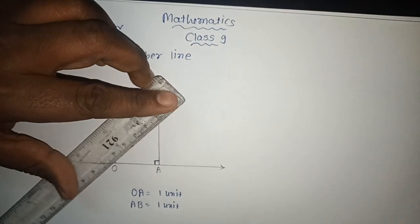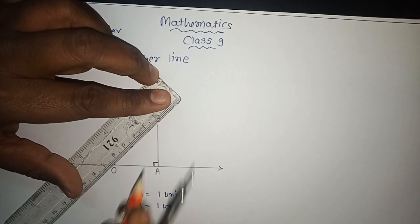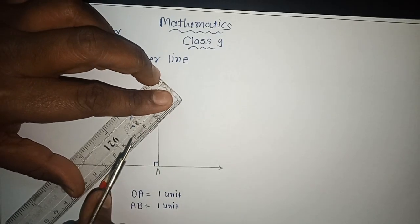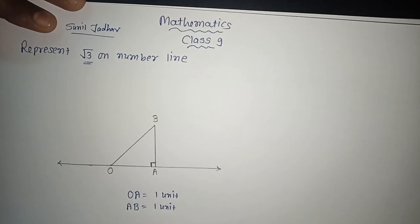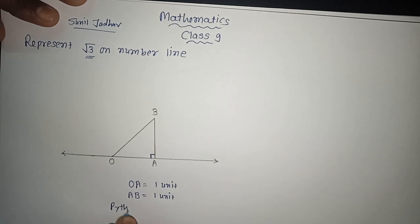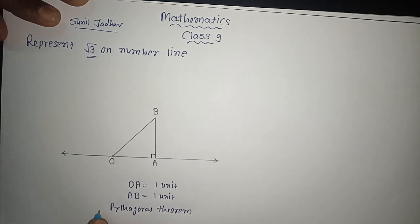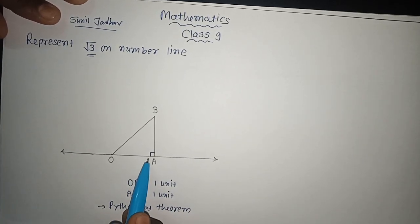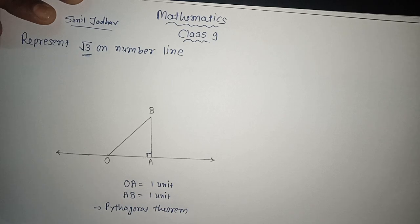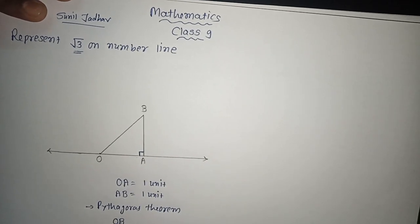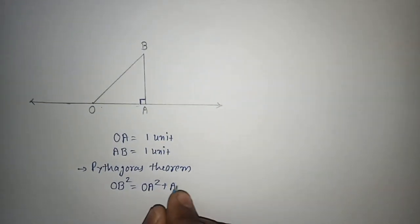Now I will join these two points — that is point O and point B. Now we have to represent under root 3, and for that we should implement the Pythagoras theorem. The Pythagoras theorem states that in a right-angle triangle, the square of the hypotenuse is equal to the sum of the squares of both the sides forming the right angle. So I write: OB² = OA² + AB².